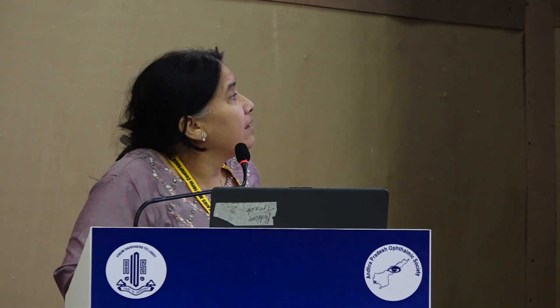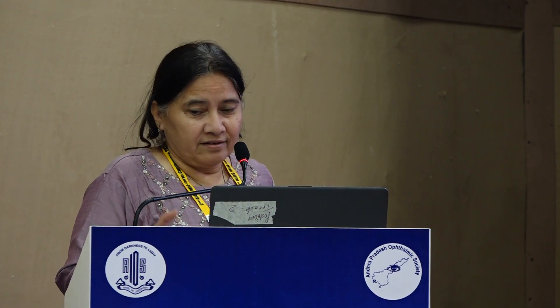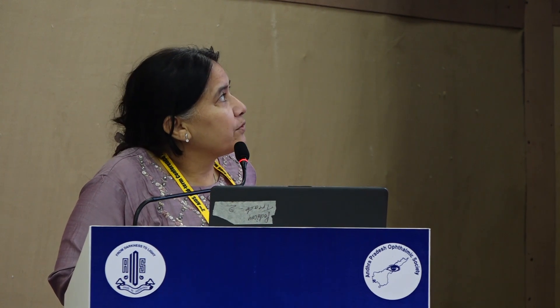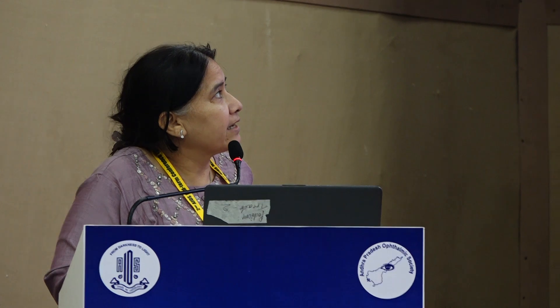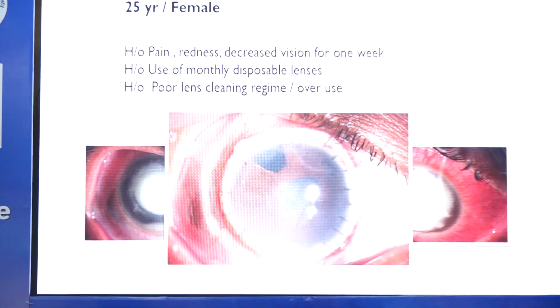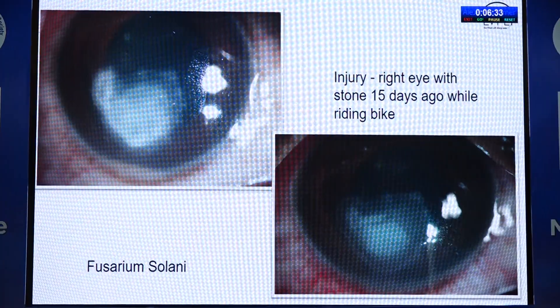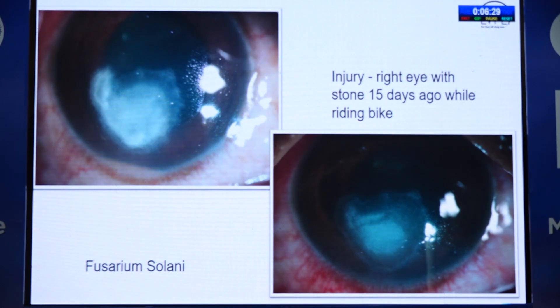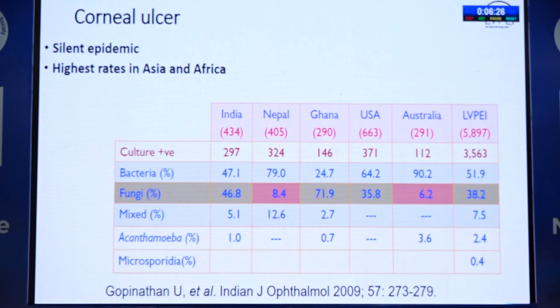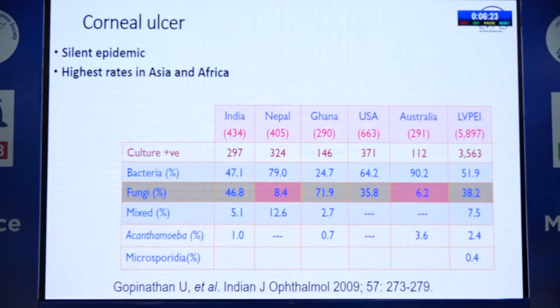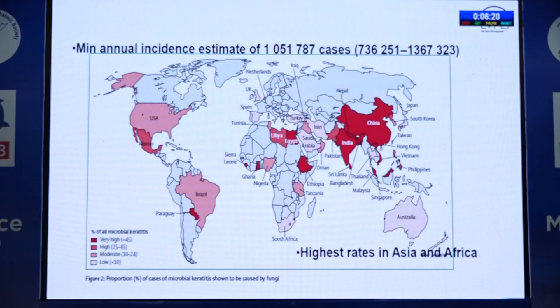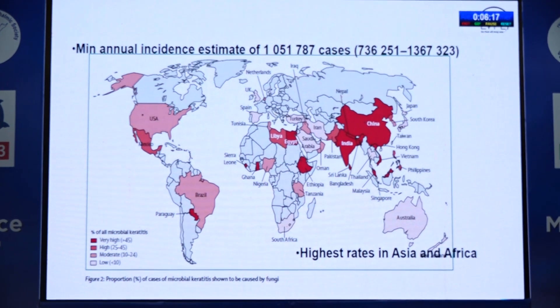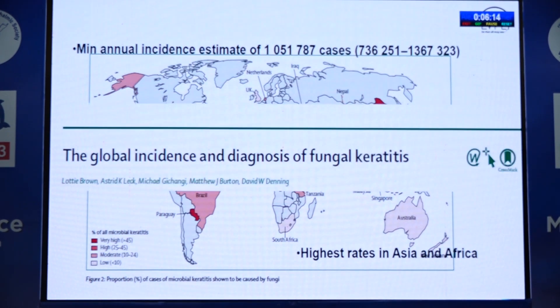Good afternoon. This presentation is about the use of trypan blue as a staining method in the management of infectious keratitis. Corneal ulcer is a silent epidemic; cases of fungal keratitis are increasing in India and abroad. Minimum annual incidence estimates are quite high. We have heard about corneal scraping — basic requirements and culture media — though culture media are not performed everywhere, especially in private clinics.